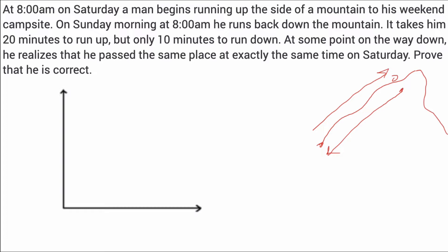We're going to use a T-Y axis here. We'll call this the T-axis for the time of day, and the Y-axis to represent how high up the mountain we might be. Since we all have this reference at 8 o'clock, we'll call the origin the time index 8 a.m. — but we could also generalize and call that time index T sub 1.